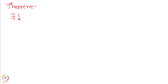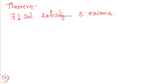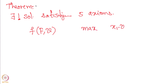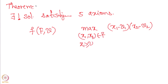Now let us go to the theorem. There exists a unique solution satisfying the 5 axioms. Recall the 5 axioms are: strong Pareto efficiency, individual rationality, scale covariance, independence of irrelevant alternatives, and symmetry. The solution is given by f(F,v), which maximizes the product (x1 minus v1)(x2 minus v2) subject to (x1,x2) in F, x1 ≥ v1, x2 ≥ v2.